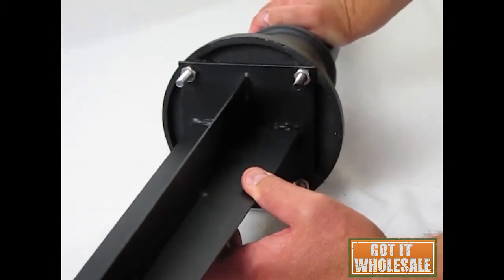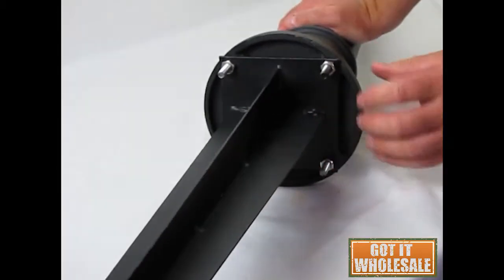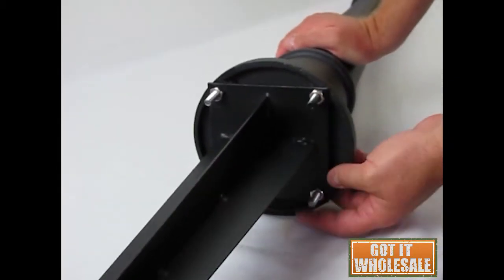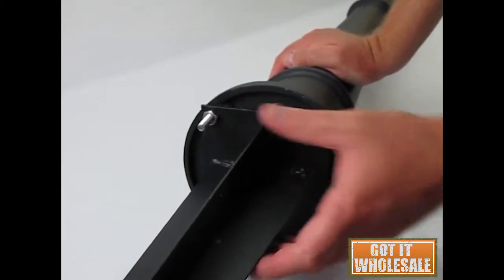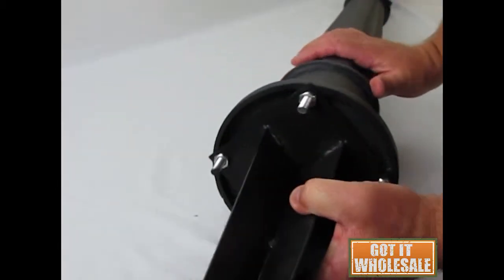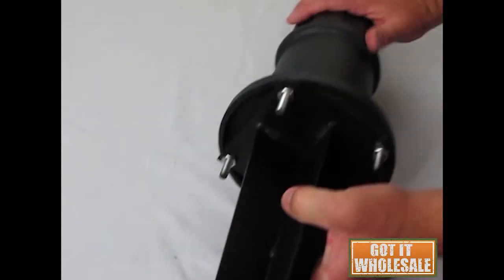However, what I would ask you to do is go ahead and put the bolts through. Once you get all the bolts through, start tightening it down on each side. It will tighten down flush. You can see here we've got all four bolts tightened down.